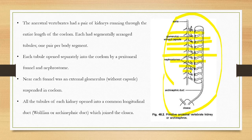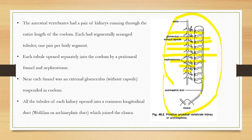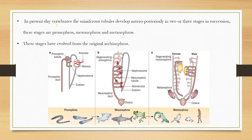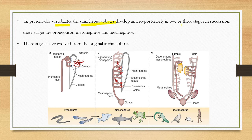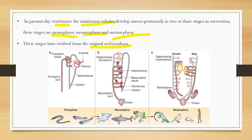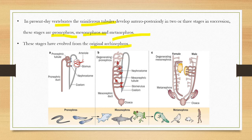All these uriniferous tubules join to a common duct, this is called archinephric duct, which finally joined to the cloaca. In present vertebrates, the uriniferous tubules or the nephron develop anteriorly posteriorly in two or three stages in succession. These stages are pronephros, mesonephros, and metanephros, which developed from an original archinephros.